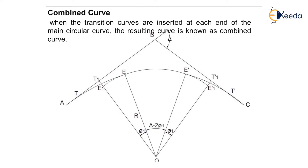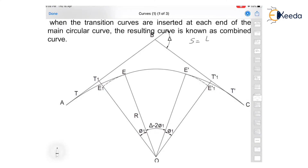To calculate the required data for setting out the combined curve, we need: the deflection angle between the two straights at intersection point B, the radius R, the length of transition curve L, and the chain age of the point of intersection B. Then first we have to find the shift S of the circular curve using the formula S = L squared upon 24R.